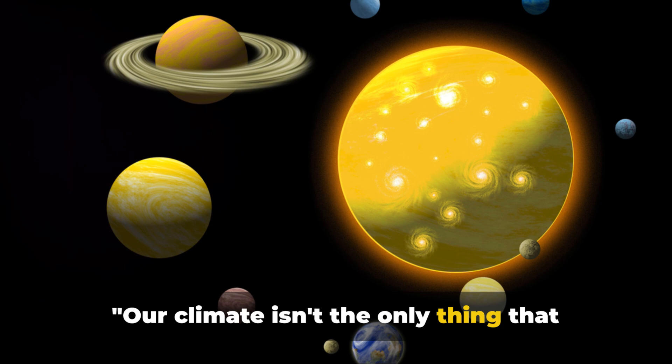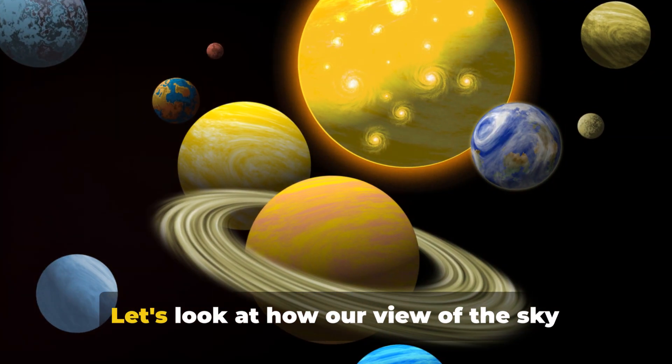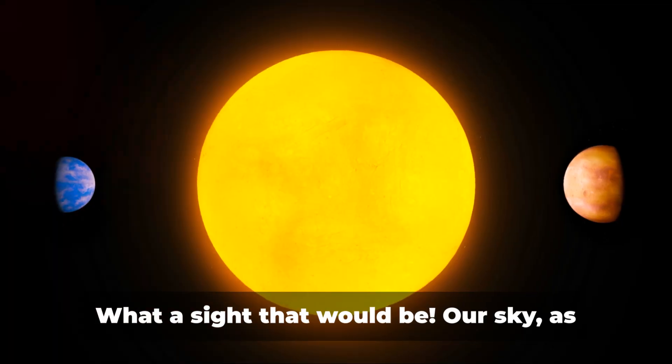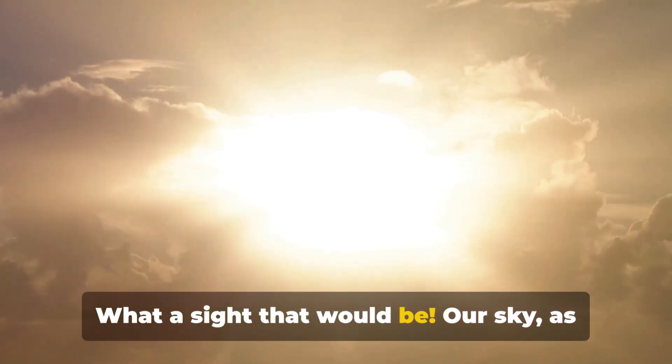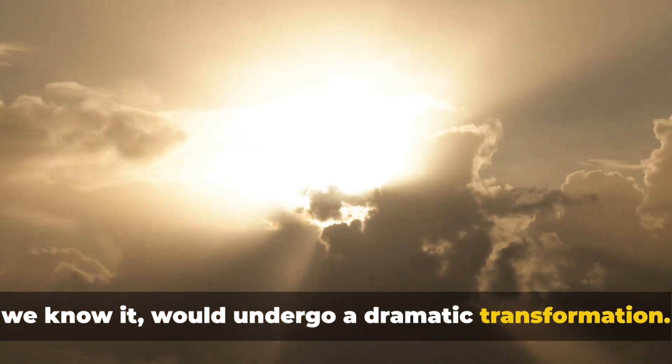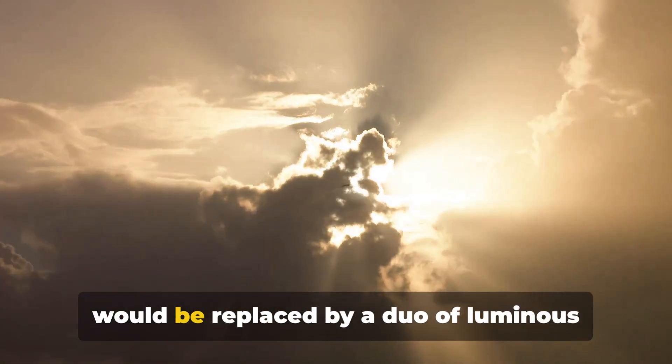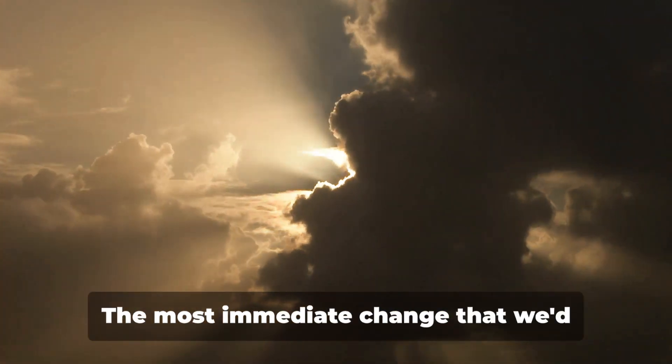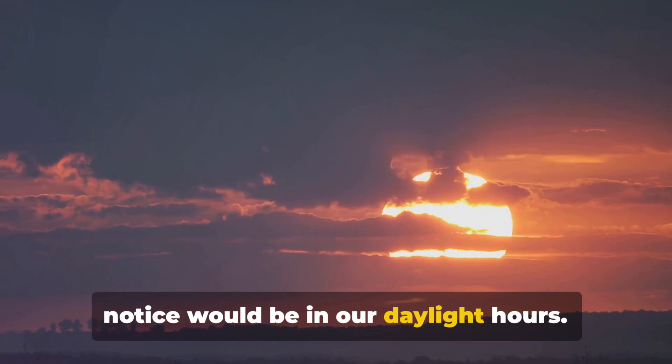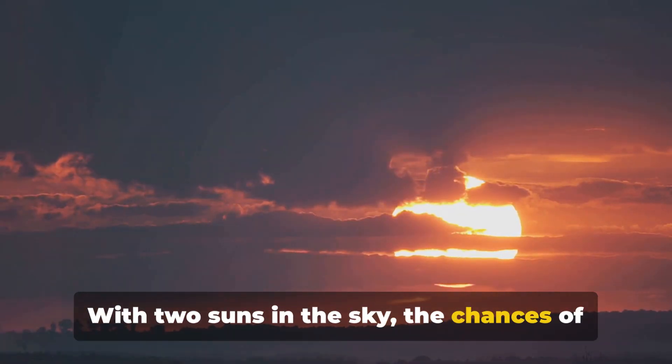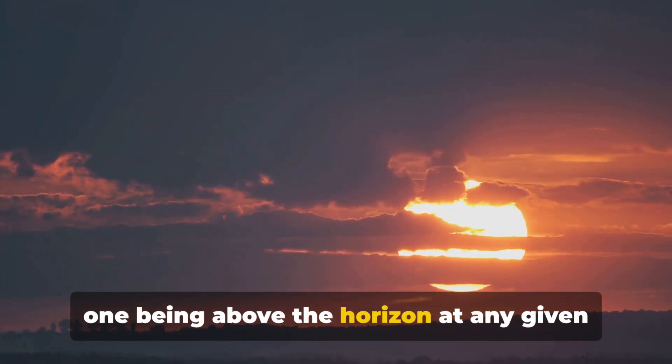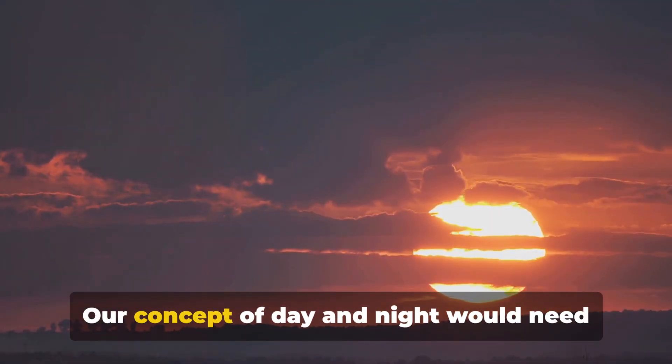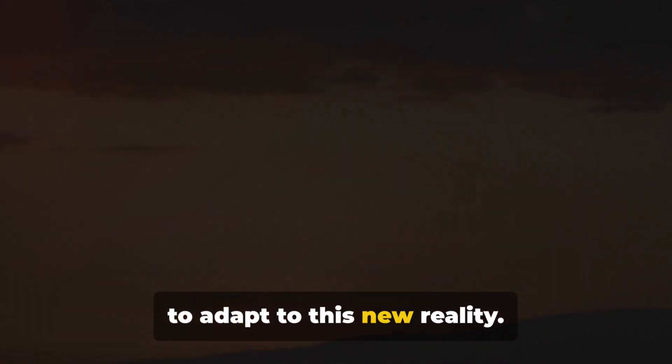Our climate isn't the only thing that would change though. Let's look at how our view of the sky would transform. Imagine looking up and seeing two suns in the sky. What a sight that would be. Our sky as we know it would undergo a dramatic transformation. The familiar single source of daylight would be replaced by a duo of luminous orbs, casting their glow from two different points in the heavens. The most immediate change that we'd notice would be in our daylight hours. With two suns in the sky, the chances of one being above the horizon at any given time would significantly increase. This could mean longer days and shorter nights. Our concept of day and night would need to adapt to this new reality.